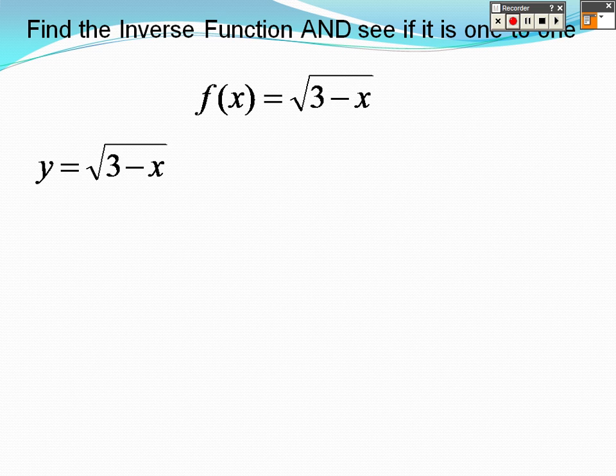Find the inverse and see if it's one-to-one. I have the square root of 3 minus x. So to get rid of that, I would square both sides. So I get y squared equals 3 minus x. I'd minus 3.